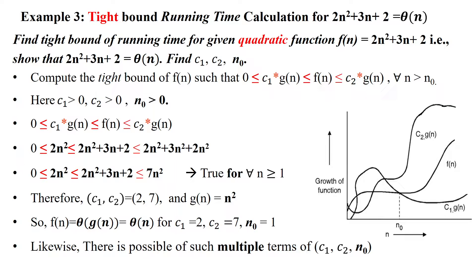Welcome to tight bound running time calculation for a given quadratic function: 2n² + 3n + 2 = Big Theta of n. It can be asked as: show that 2n² + 3n + 2 = Big Theta of n, and find c1, c2, and initial input size n0 for the given function f(n).